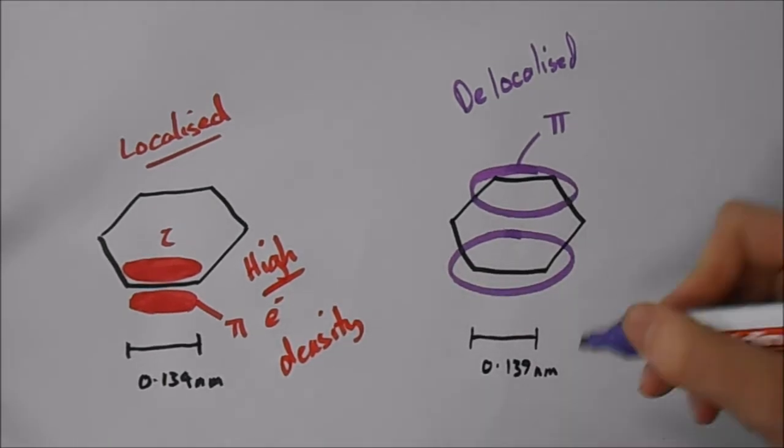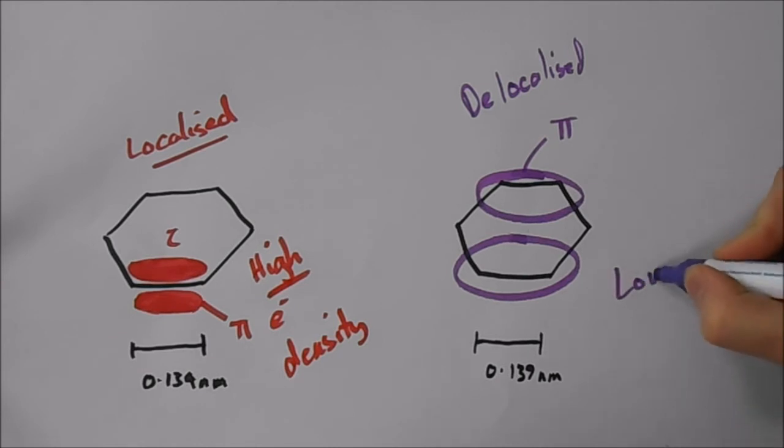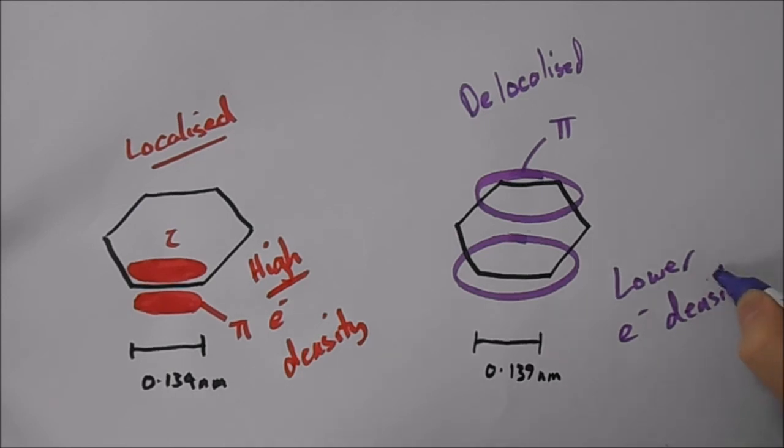And here we have lower electron density, which means that the benzene cannot actually cause that dipole to form in the first step of an addition reaction.